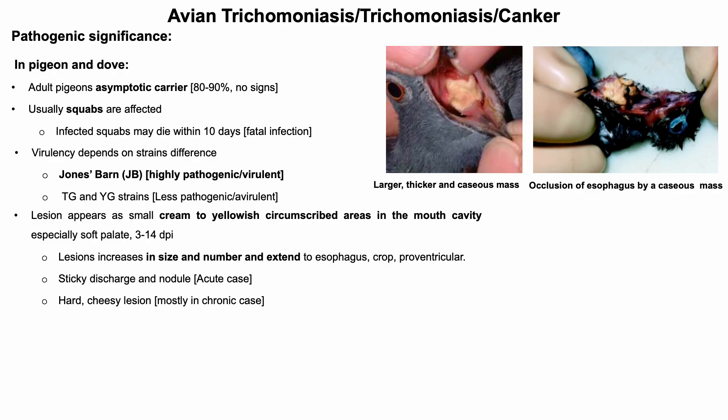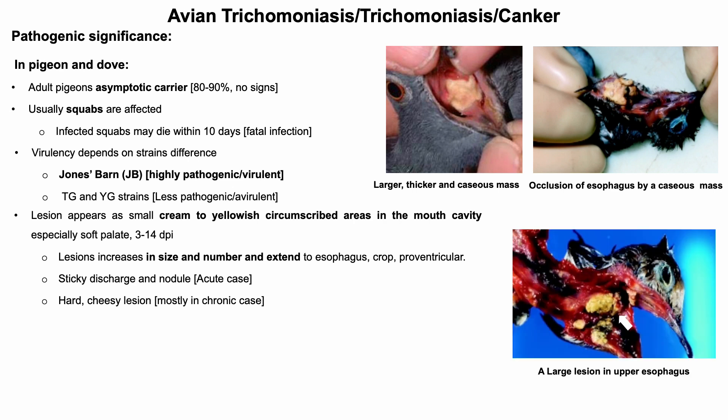Hard, cheesy lesions are also seen more in chronic infection. A bird will starve when these masses prevent it from swallowing food and water. These large lesions can further invade the roof of the mouth and sinuses, and may even penetrate through the base of the skull into the brain.